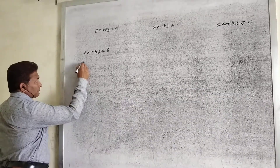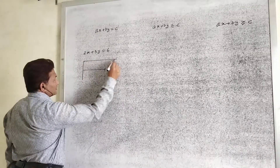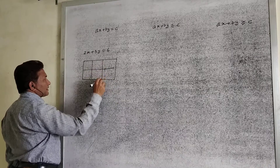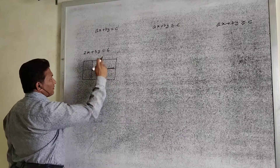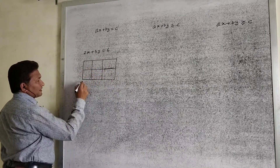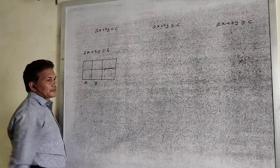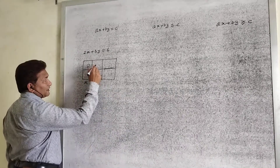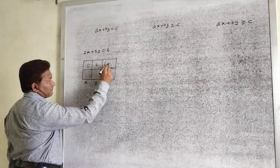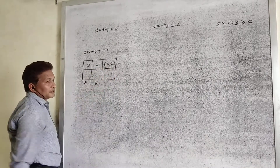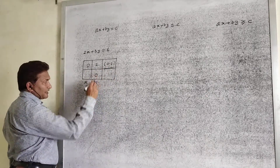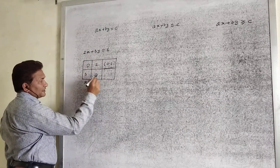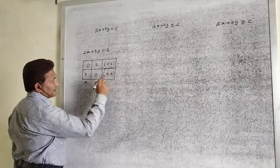To draw the graph, we need points — the points on this line. For that, consider x equal to 0. We get y equal to 2. So the first point is (0, 2). For the second point, consider y equal to 0. For this value, we get x equal to 3. Therefore, the second point is (3, 0).